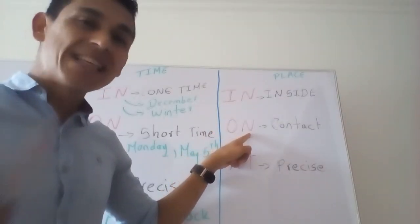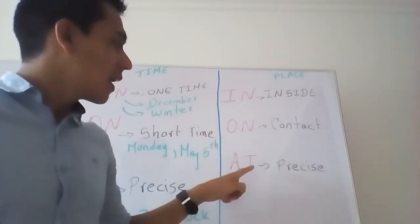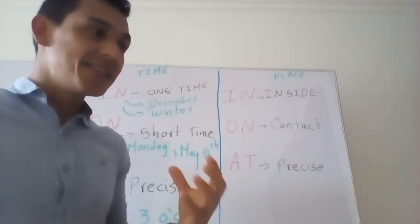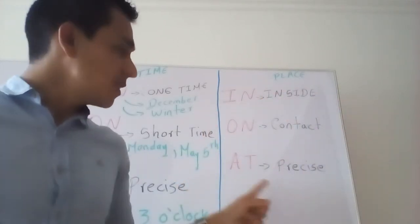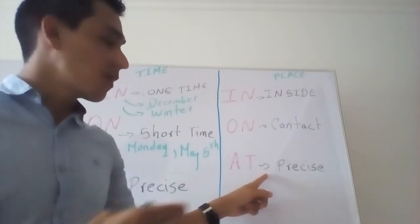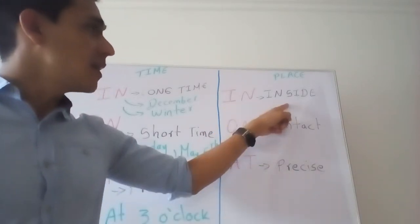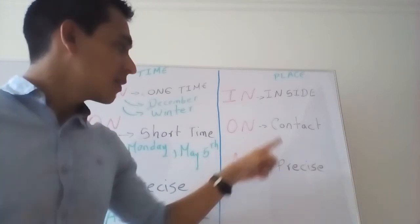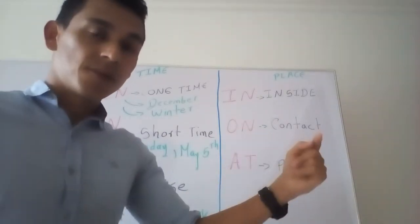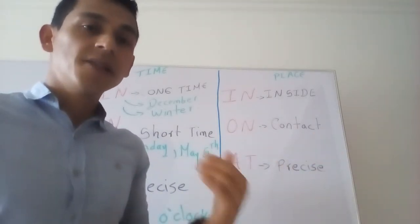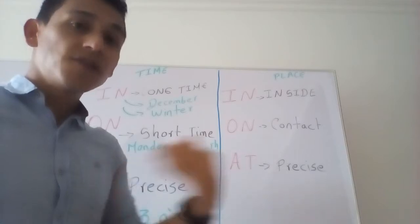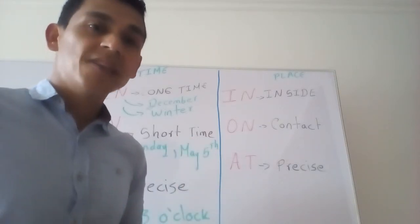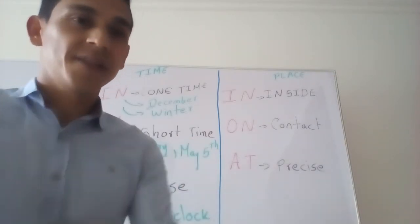'At the window' — I precise that I am near the window. So 'at' means near, close to something. We say 'in the classroom, on the second floor, at the window.' 'At the window' indicates the position that I am in. Now we have some exercises to practice — let's get started.